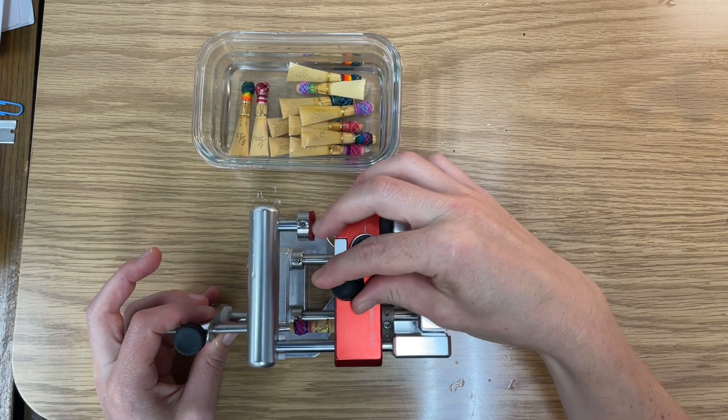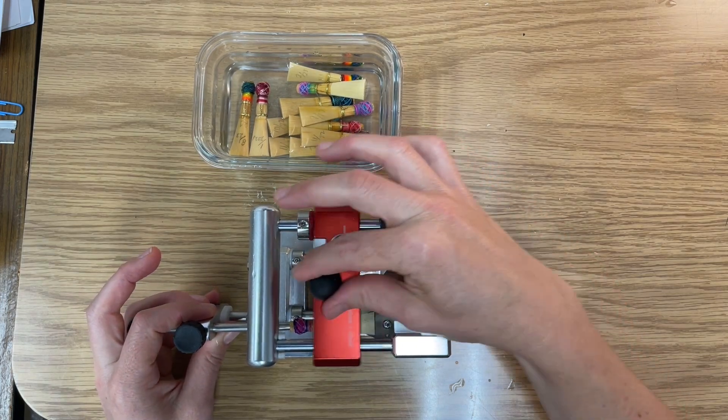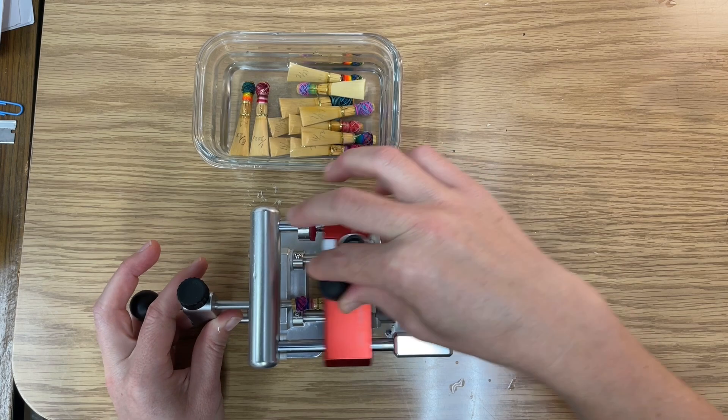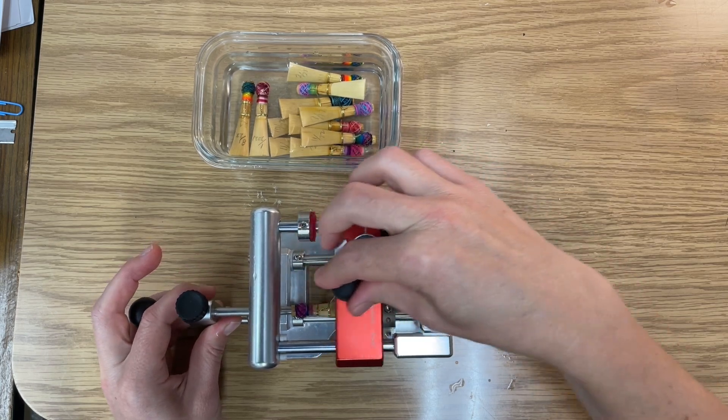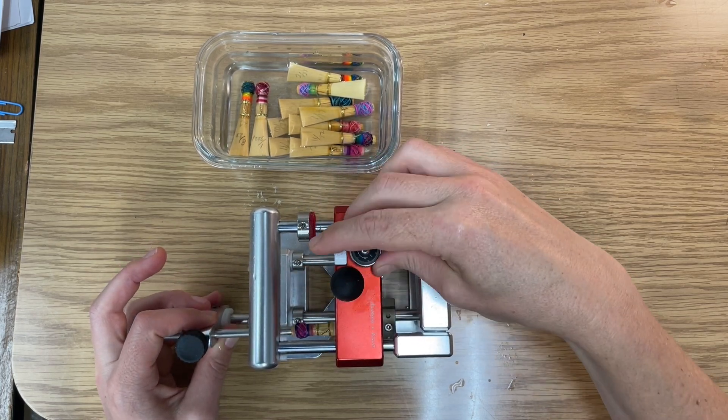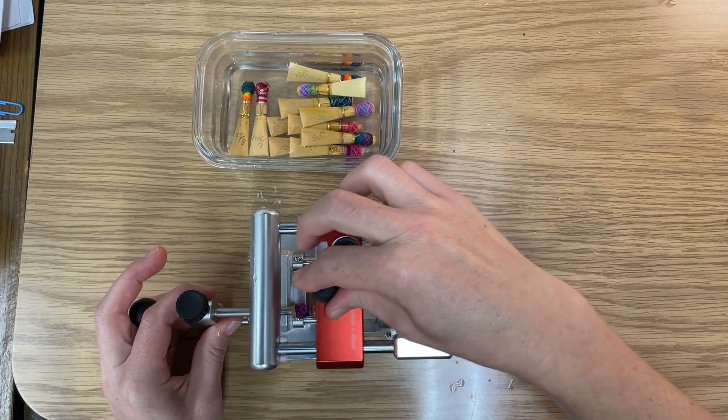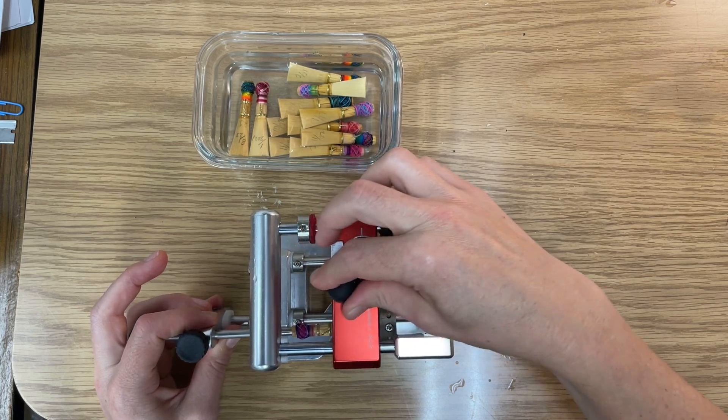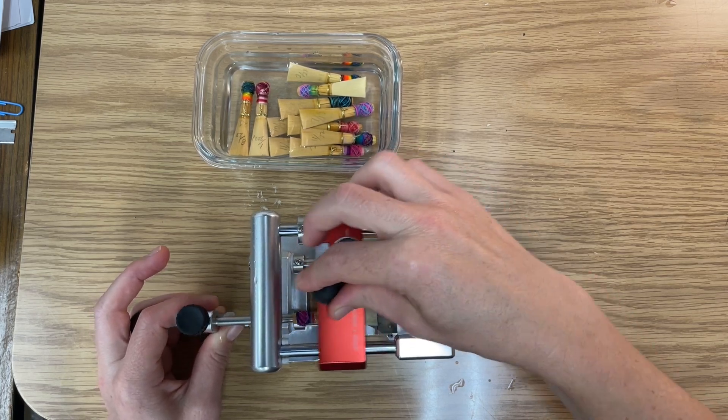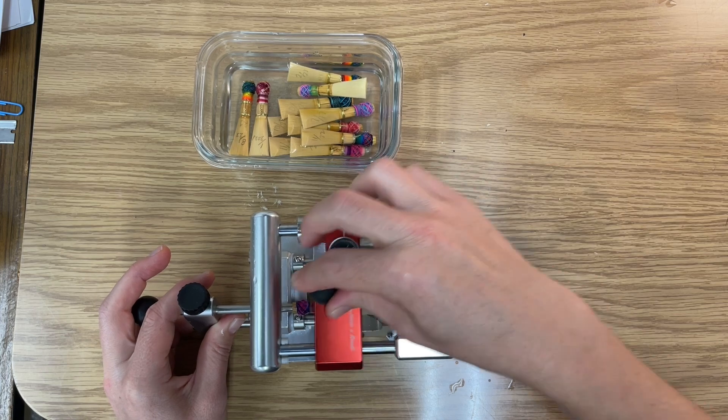So after every pass I'm going to turn it more towards the minus sign so that the next pass it takes off a little bit more. There we go. You can see it's just taking off a tiny bit.